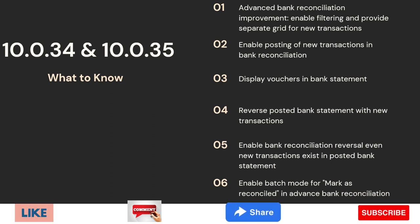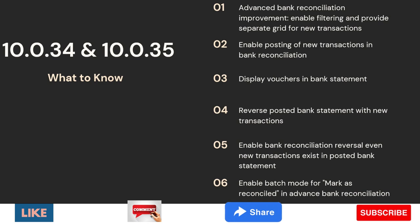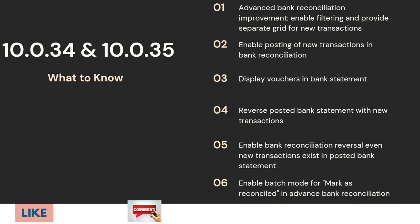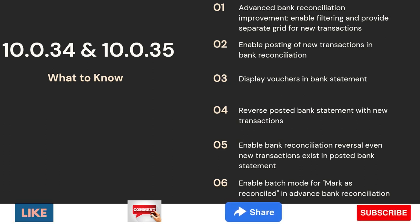The first feature we will see is the advanced bank reconciliation improvement — enable filtering and provide a separate grid for new transactions. Very interesting. Second, enable posting of new transactions in bank reconciliation. Third, display vouchers in bank statement. Fourth, reverse posted bank statement with new transactions. Fifth, enable bank reconciliation reversal even when new transactions exist in the posted bank statement. Sixth, enable batch mode for mark as reconcile in advanced bank reconciliation. These are all improvements or enhancements in existing features.